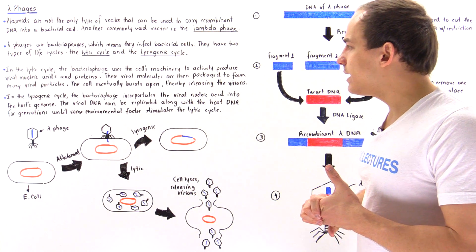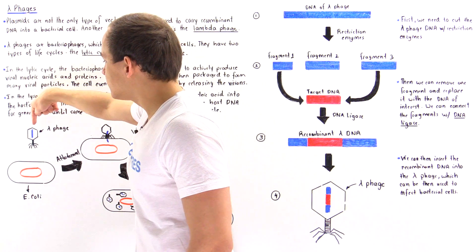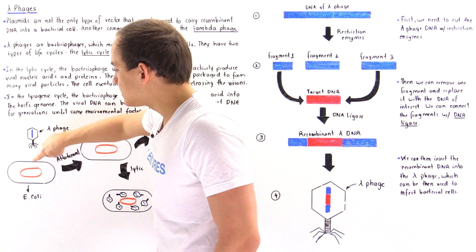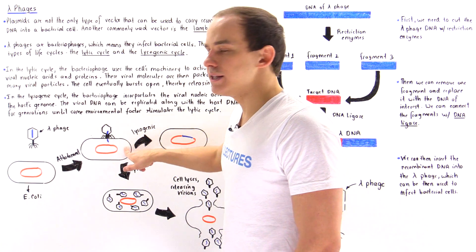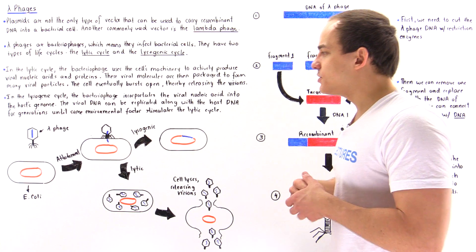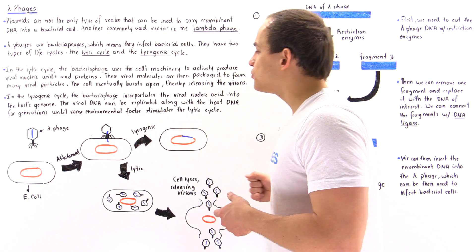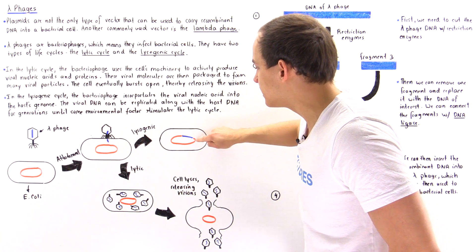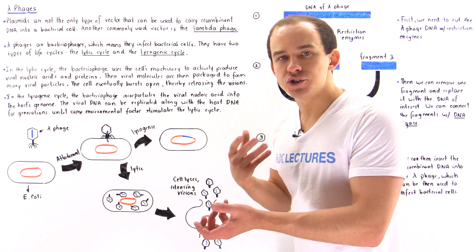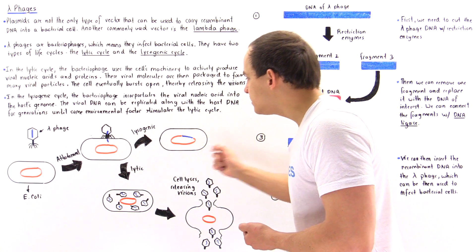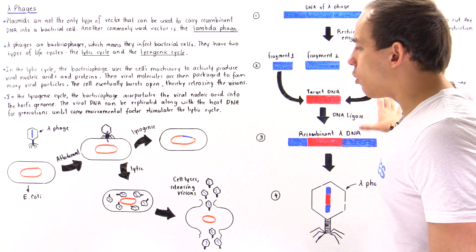Let's take a look at a diagram that summarizes these two different cycles. The lambda phage contains that viral DNA molecule, attaches onto the cell membrane using receptors, and then injects that DNA molecule into the cell. If the environmental conditions are correct, the virus will undergo the lysogenic cycle, in which the DNA is simply incorporated into the cell's genome. The cell can then live on for generations, and as it divides, the viral DNA molecule along with the genome will be replicated and passed to offspring cells.